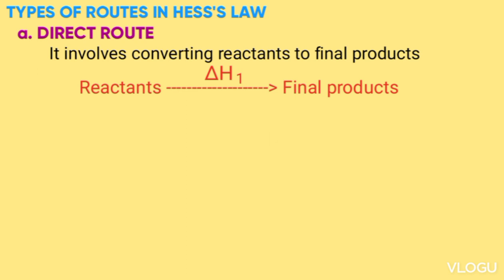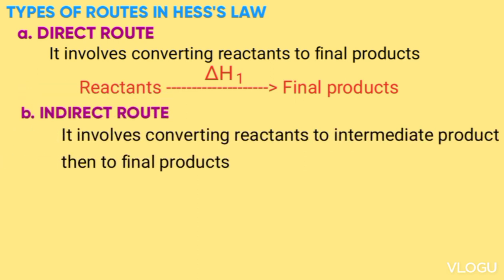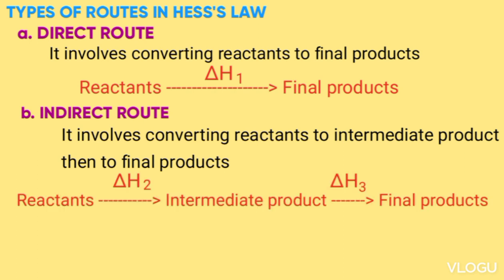The second type is called indirect routes, which involve converting reactants to intermediate products, then to final products. This is shown as reactants → intermediate products with ΔH₂, then intermediate products → final product with ΔH₃.